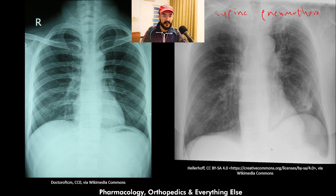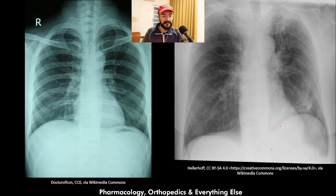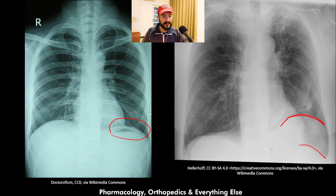Comparing the supine pneumothorax frontal chest x-ray with a normal chest x-ray: in the normal x-ray the costophrenic sulcus is narrow on both sides, while in the pneumothorax x-ray the left costophrenic sulcus is very deep — the deep sulcus sign. On the pneumothorax x-ray the diaphragm is sharp and transparent, compared to the blurry diaphragm on the normal x-ray. The pneumothorax x-ray also shows the double diaphragm sign with two visible diaphragm lines, whereas the normal x-ray shows only one.